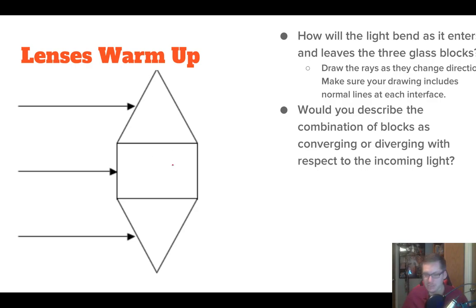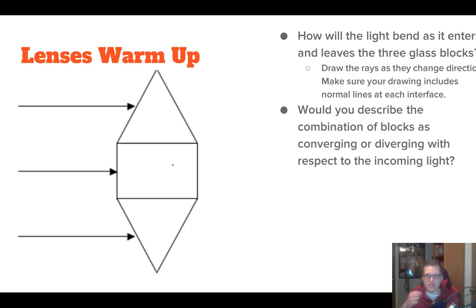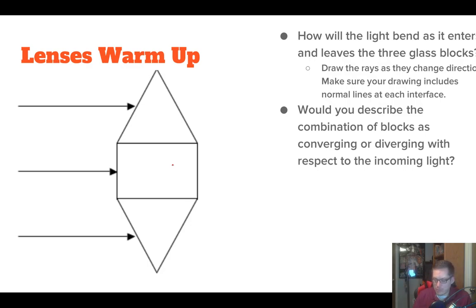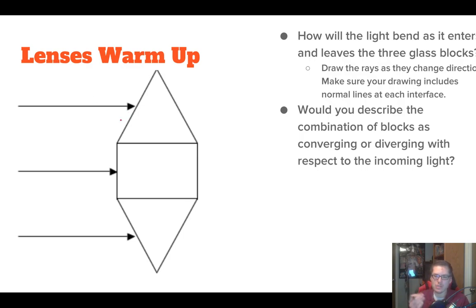So last video we talked about Snell's Law, and we talked about how when light passes through different mediums, it actually speeds up or slows down as it crosses that boundary. And when that happens, it refracts. Before when we talked about mirrors, we talked about reflection — how light bounces off of things to end up somewhere else. But with refraction, our light actually bends, and this gives us that optical illusion where if you stick a pencil in water, it looks like it broke.